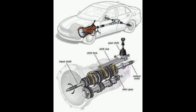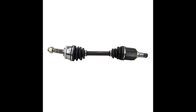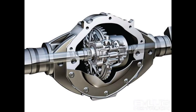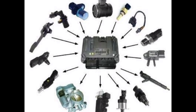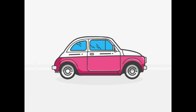The transmission system in automobiles consists of essential components that enable the vehicle to shift gears smoothly. These include the gearbox, clutch, torque converter, drive shaft, differential, and various sensors, working together to transmit power from the engine to the wheels, ensuring optimal performance and control.